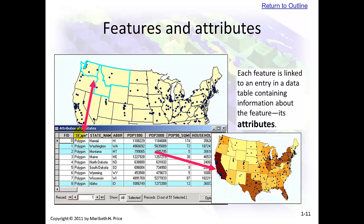Features and attributes. This shape is a polygon, and the polygons are indicated here. Right now there are three selected: Washington, Montana, and Idaho — that's why they're light blue on this map. Each individual state has attributes; for example, Washington gives us population in 1990 and population in 2000. Each feature is linked to an entry in a data table containing information about the feature. These are called attributes.